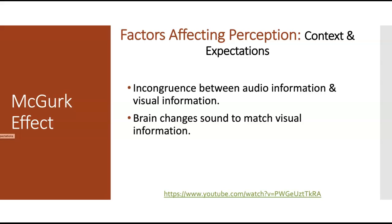Another interesting illusion is the McGurk effect. Every species has a dominant sense, and for humans that is vision. The McGurk effect occurs when the visual information you are seeing and the audio information your ears are receiving do not match. Your brain wants to correct that mismatch, so it changes the sound to match the visual information — not the other way around. It is always the visual information that takes priority.